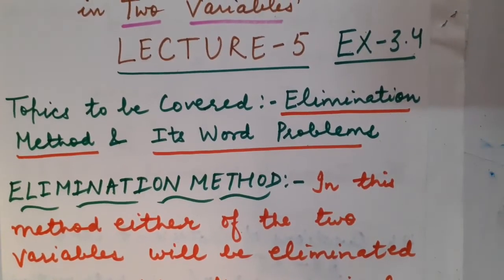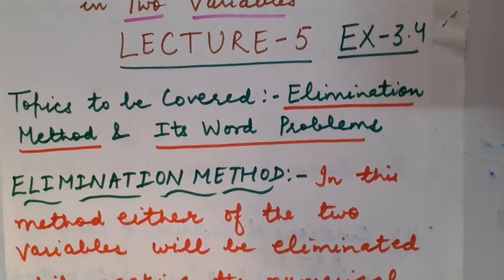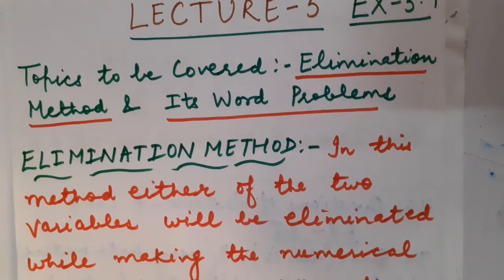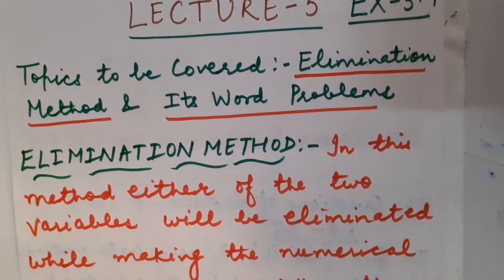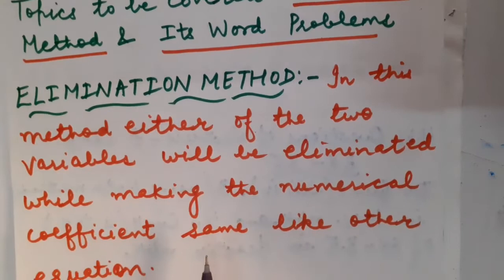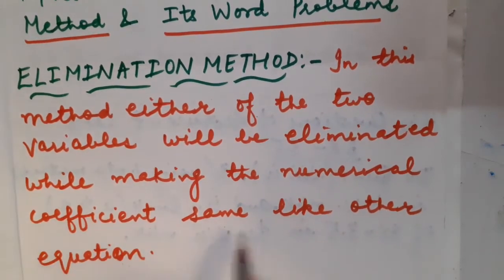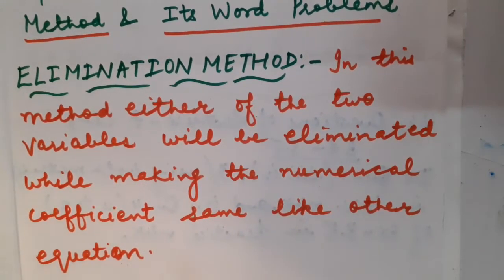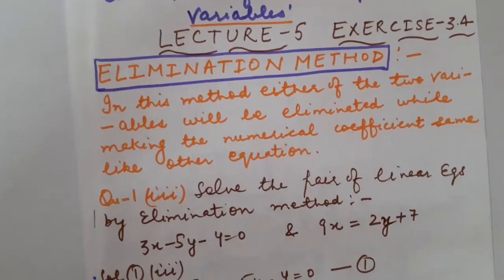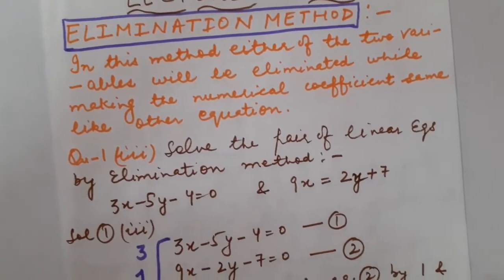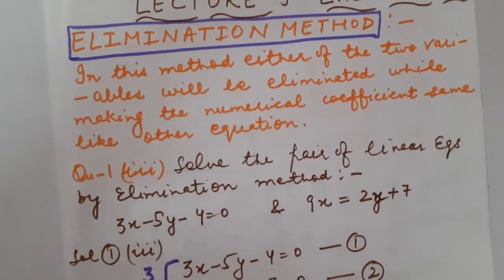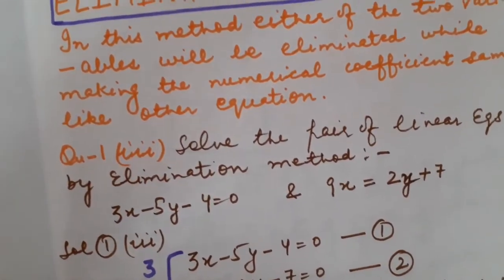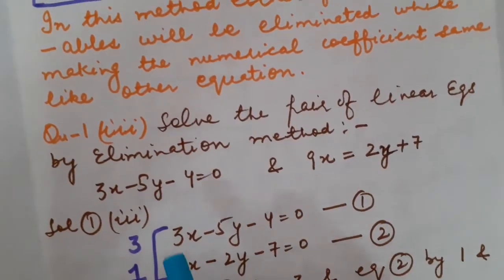What do you mean by Elimination Method? In this method, either of the 2 variables will be eliminated. How will we eliminate them? By making the numerical coefficients same as the other equation. For better clarity of the concept and definition of Elimination Method, let us switch to the questions.